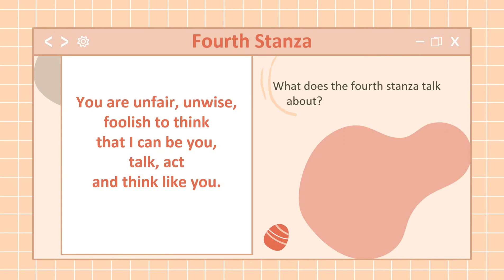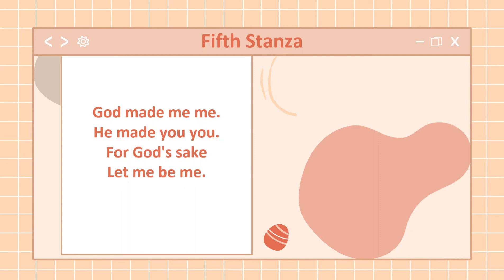For the last stanza — the fifth stanza: 'God made me me, he made you you. For God's sake, let me be me.' In the last stanza, the persona highlights the difference in how God created them — Africans — and the invaders, and asserts that the invaders should not interfere with their lives. The persona ends the poem pleading to let Africans be Africans, for God's sake.